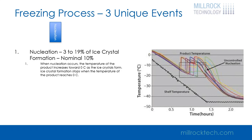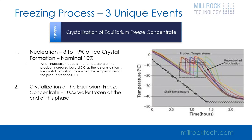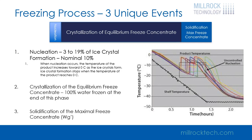Once nucleation has ended, we have an equilibrium freeze concentrate, and by removing more heat via a cold shelf, the equilibrium freeze concentrate starts to form and grow ice crystals. Once all the available water has frozen, we have a maximal freeze concentrate, and that maximal freeze concentrate will then be reduced in temperature down below the Tg prime, or glass transition temperature, of the product so we can then go into the primary drying phase.